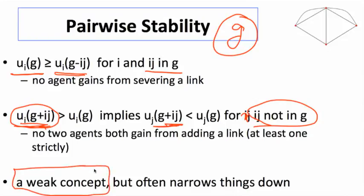Why is it weak? Well, it's only looking at pairs of individuals, only looking at one link at a time, and it just makes sure that there's no single link that would be better deleted and no link that's not present that would be better to add. But often this already is a fairly powerful, sort of a minimal set of requirements that we might think of in terms of stability. It'll often begin to narrow things down.